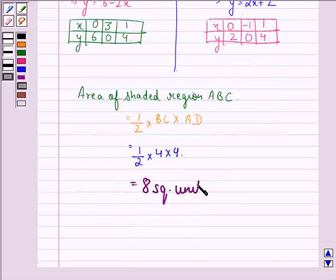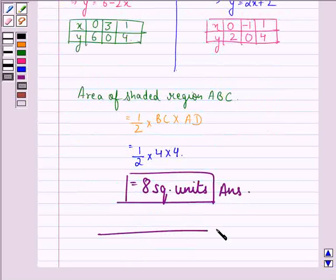So our answer to this question is that area of the shaded region is 8 square units. I hope that you understood the solution and enjoyed the session. Have a good day.